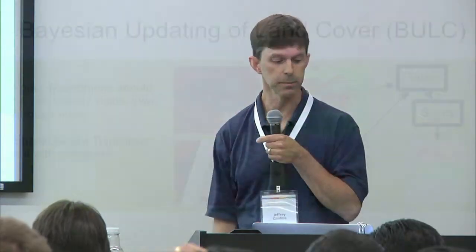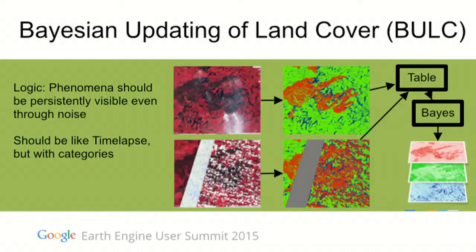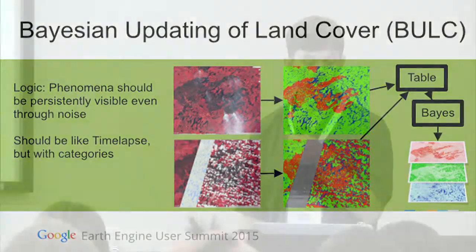Our idea is that because we can see it with our eyes, we should be able to trace this land cover through time and in effect scratch out the clouds — not by doing atmospheric correction, although that will be helpful, but by thinking of it in the same way that when we watch a movie, you can have little bits of the frame drop out and we can still see the movie. The phenomenon of interest should be persistently visible even through noise. The goal is something like time lapse but with categories.